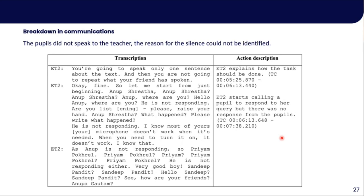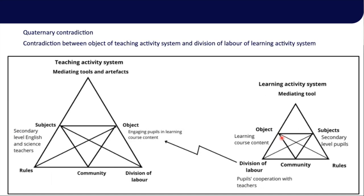There were also instances of breakdown in communications — not only virtual cursing. Pupils did not speak to the teacher when she was asking questions and trying to trigger them to speak on certain prompts. This shows a quaternary contradiction between the division of labor in the learning activity system — pupils' lack of cooperation with teachers — and the teacher's object in the teaching activity system, which was engaging pupils in learning course content.